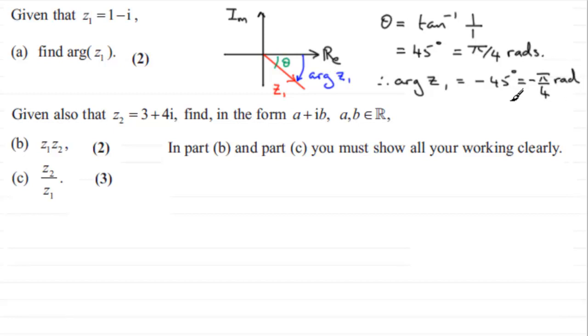We're given then also that z₂ is equal to 3 plus 4i and asked to find in the form a plus ib, where a and b are real numbers, z₁ times z₂ and z₂ divided by z₁. So let us start with part b first of all. We're doing z₁ multiplied by z₂, which is going to equal, for z₁, 1 minus i, and we're multiplying that with z₂, which is 3 plus 4i.